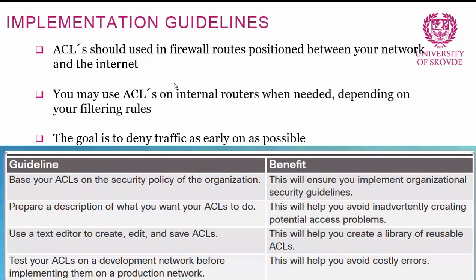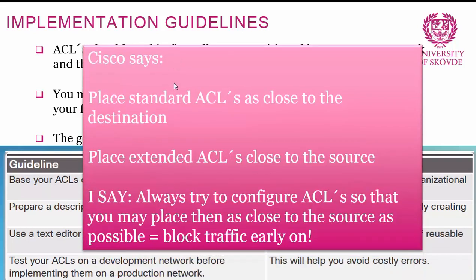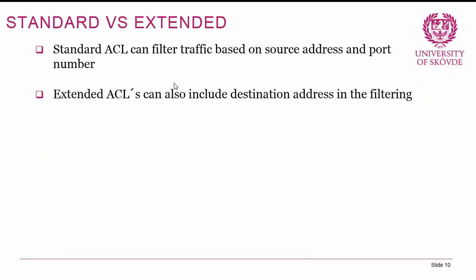Cisco says to place standard ACLs as close to the destination as possible and extended ACLs as close to the source as possible. My recommendation is to always try to place ACLs as close to the source as possible to block traffic early on. However, there is another rule: go for simplicity. If placing an ACL a little further from the source lets you use one ACL instead of two or three, that's a good call.